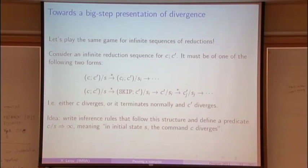and it diverges. So it has an infinite reduction sequence. What can happen? I claim only two things can happen. Either the left part, c, diverges, and so we never get to reduce into c prime. We'll keep reducing in c.